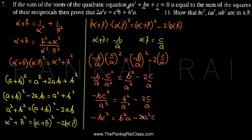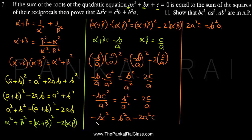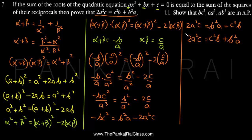Taking the negative term to the other side, we get 2a²c = b²a + c²b, which can be written as 2a²c = c²b + b²a. So we have easily proved the 7th question, which required us to show that 2a²c = c²b + b²a.